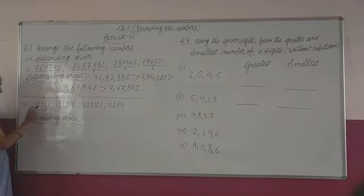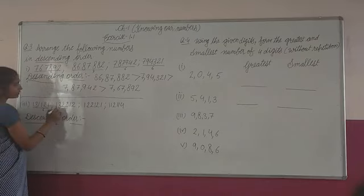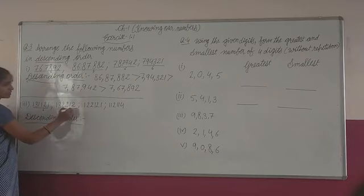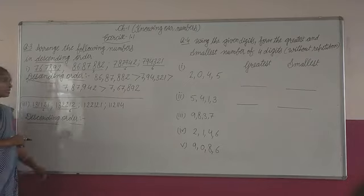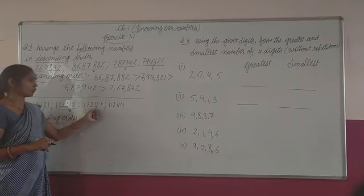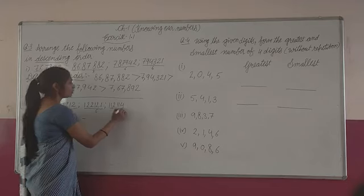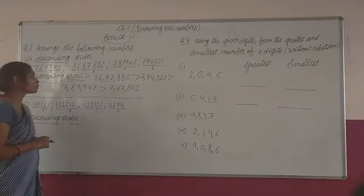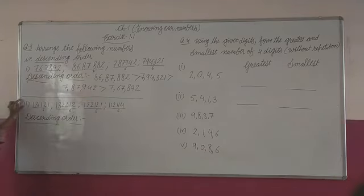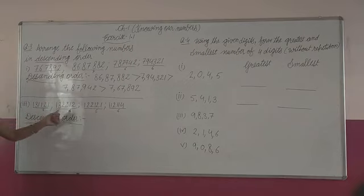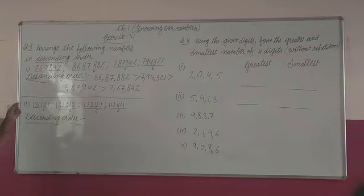In this third part, check the number of digits — six in each number. All numbers have six digits. Sorry, this is the third part — second part you have to do yourself. In the third part, the number of digits are the same in all numbers, and on the higher place all have one. That's why I chose this part to explain. Second part is easier than the first part, so you have to do it yourself.